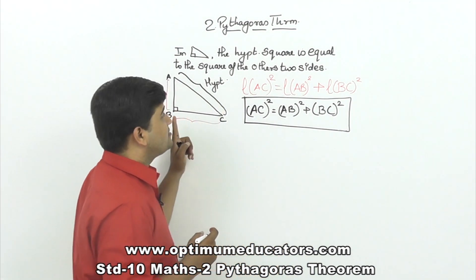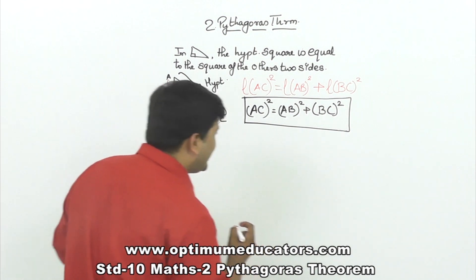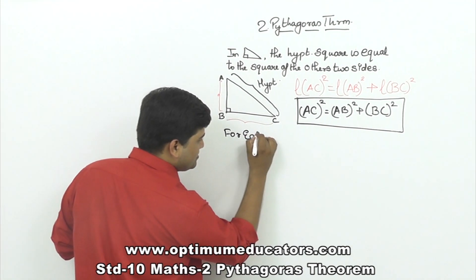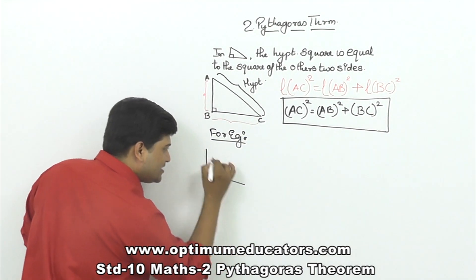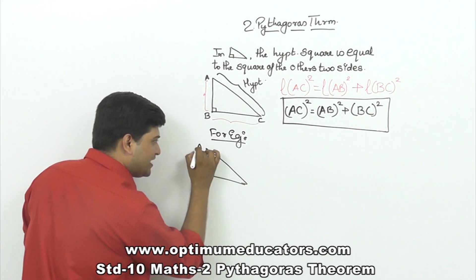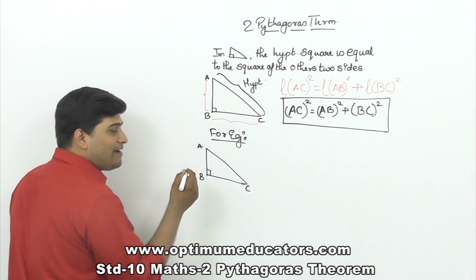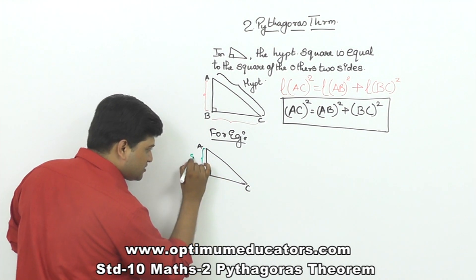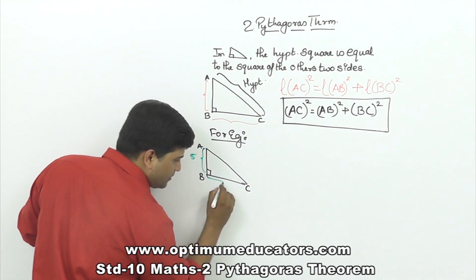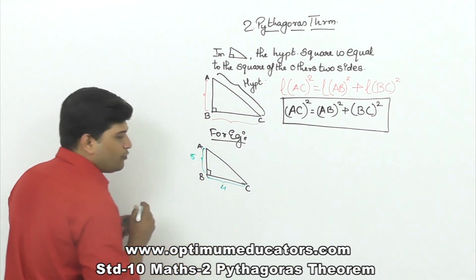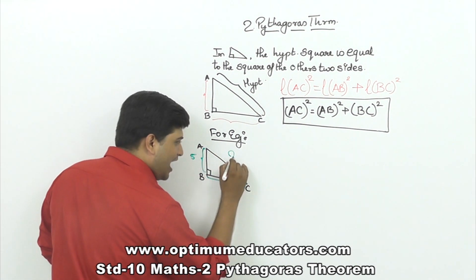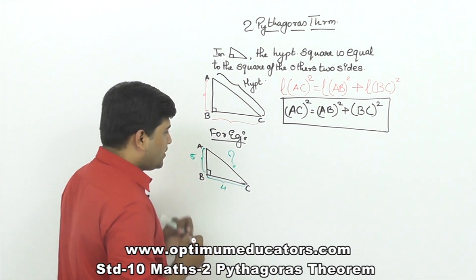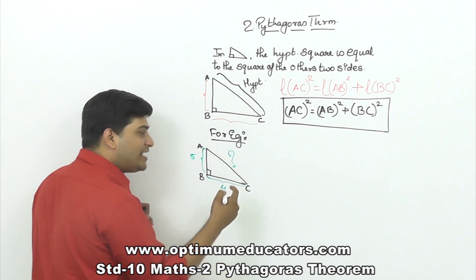With the help of this statement, by Pythagoras theorem, let us quickly see one example. For example, let us take right angle triangle ABC. If length AB is 5 cm, length BC is 4 cm, and I need to find the hypotenuse AC.